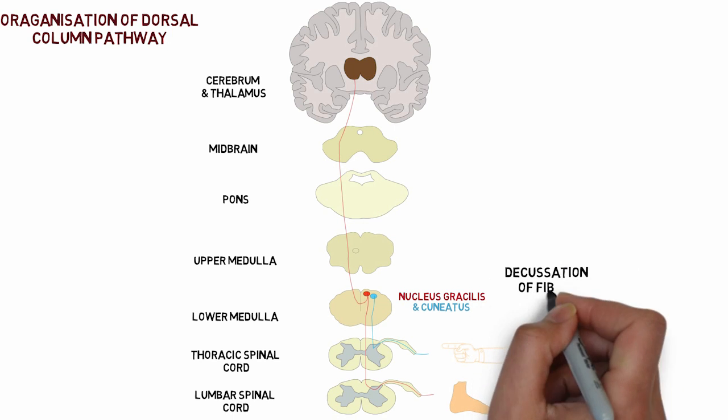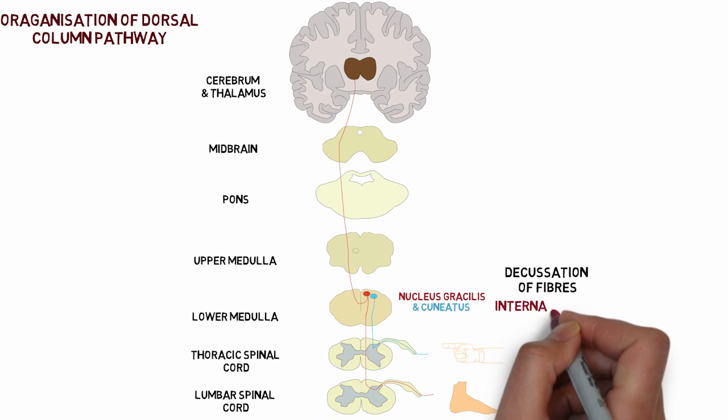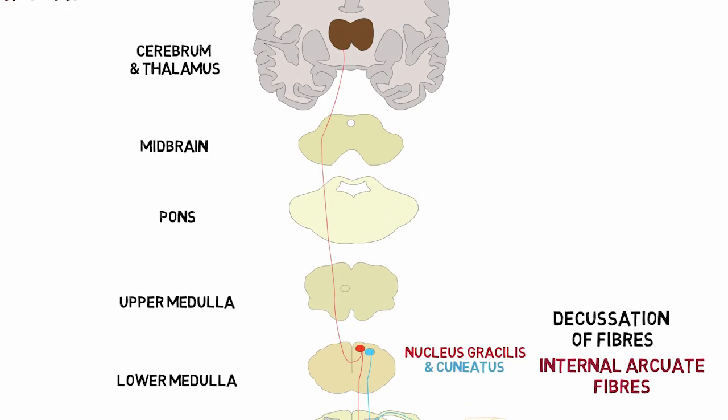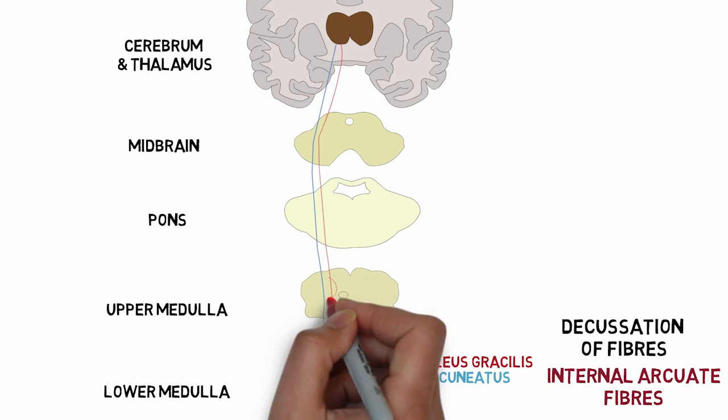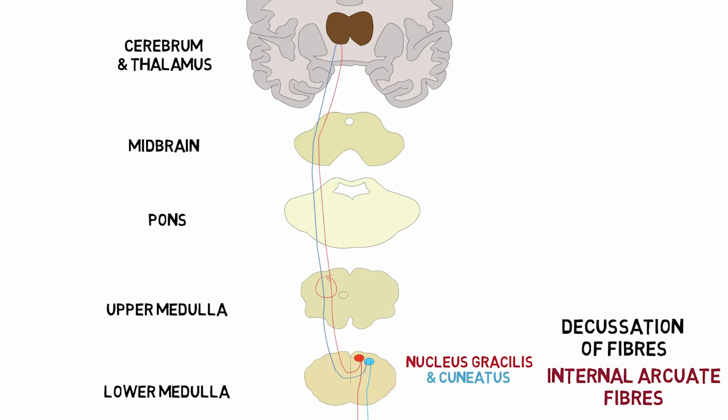This is known as the decusation of fibers, and these are known as the internal arcuate fibers. In a similar way, the fibers from the nucleus cuneatus ascend up till the thalamus on the opposite side of the spinal cord. The tract which is formed on the opposite side of the spinal cord is known as the medial lemniscus.